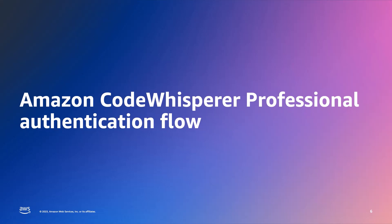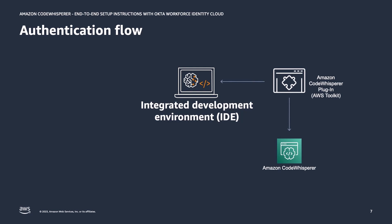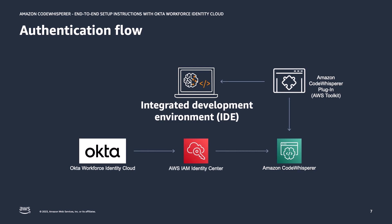Let's take a quick look at the authentication flow that your developers will experience once they have CodeWhisperer, Identity Center, and Okta fully integrated. Most developers today use some kind of Integrated Development Environment, or IDE, while writing code. Amazon CodeWhisperer supports several IDEs, like Visual Studio Code, JetBrains, and our very own web-based IDE, AWS Cloud9. After setting up the CodeWhisperer plug-in to work with Identity Center, a developer's IDE will automatically open a browser for authentication through Okta, which authorizes the CodeWhisperer session through Identity Center. Once authenticated, the developer is up and running with their IDE, ready to write code.